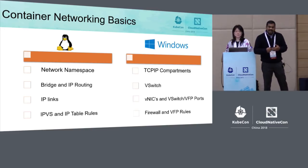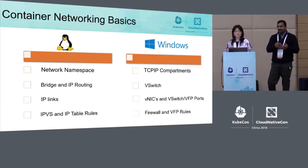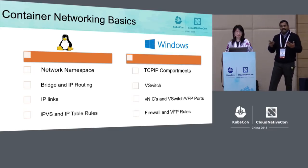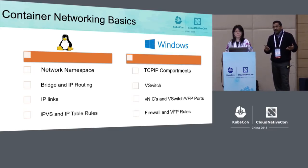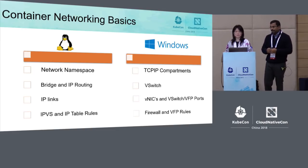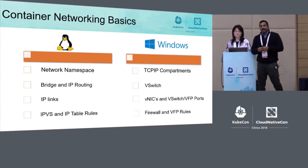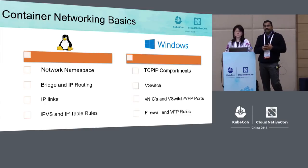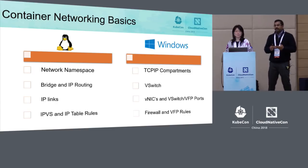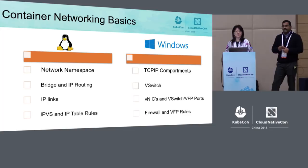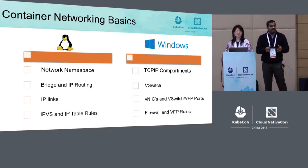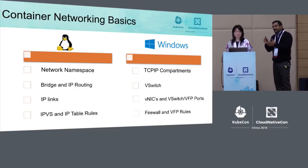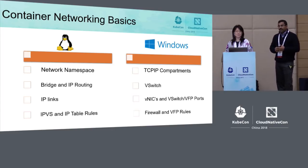IP links: the container network interfaces — hostveth or vmnic — are added to the network namespace and bound to the corresponding switch port in the vSwitch. IPvS and iptables provide rich packet filtering in Linux, whereas in Windows, Windows Firewall and VFP provide similar functionality. VFP is a virtual filtering platform — a programmable match-action based filtering engine that applies rich data plane primitives such as ACLing, metering, NATing, load balancing, encap, decap, and more. VFP is the same data plane used to power Microsoft Azure and Azure Stack, and we are bringing that same data plane to provide Windows networking functionality.